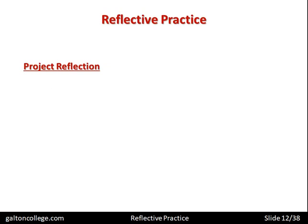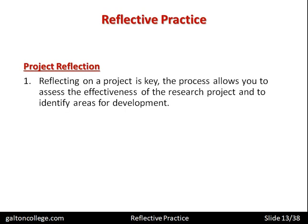Project reflection — taking an academic project as a good example, though it applies to most projects — reflects on a project and is key. The process allows you to assess the effectiveness of a research project and identify areas for development. In academic work, the research could be into academic papers, logical models, mathematical models, or whatever we are examining and looking for applications of — which we then put into our academic paper, reflecting on them as we go.